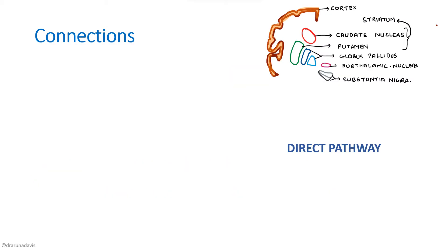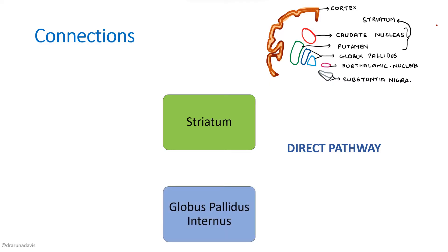Next, we will see about the direct and the indirect pathways of the basal ganglia. In the direct pathway, the major nucleus that is involved is the striatum as well as the globus pallidus internus. The major effect of basal ganglia is that all nuclei of the basal ganglia are inhibitory except for the subthalamic nucleus, which is excitatory. So in general, all the nuclei of the basal ganglia inhibit each other by releasing the neurotransmitter GABA.